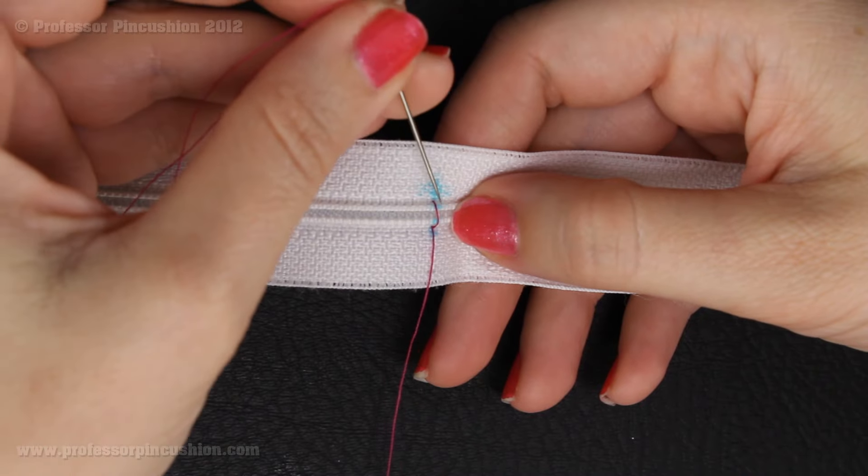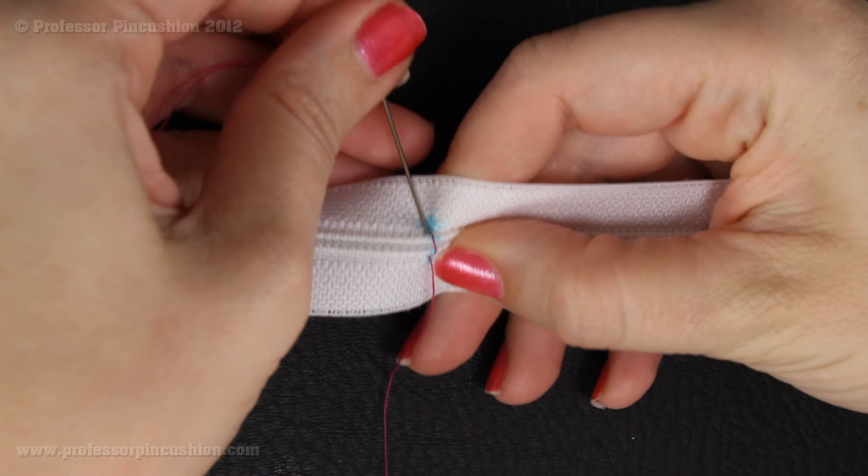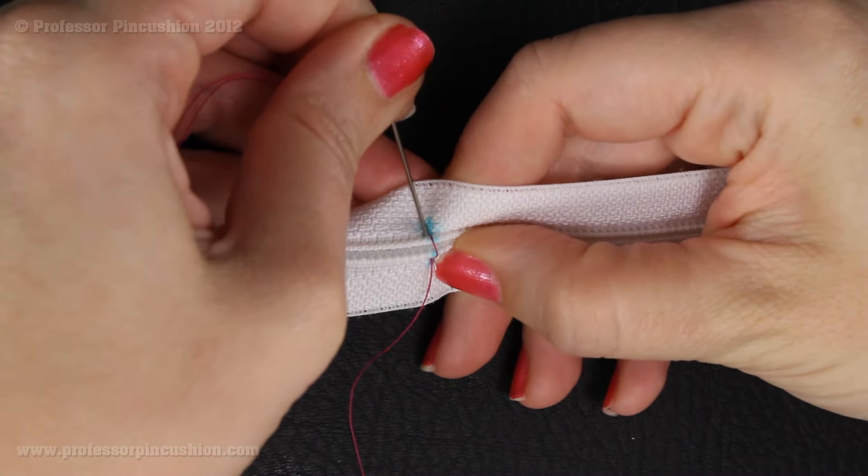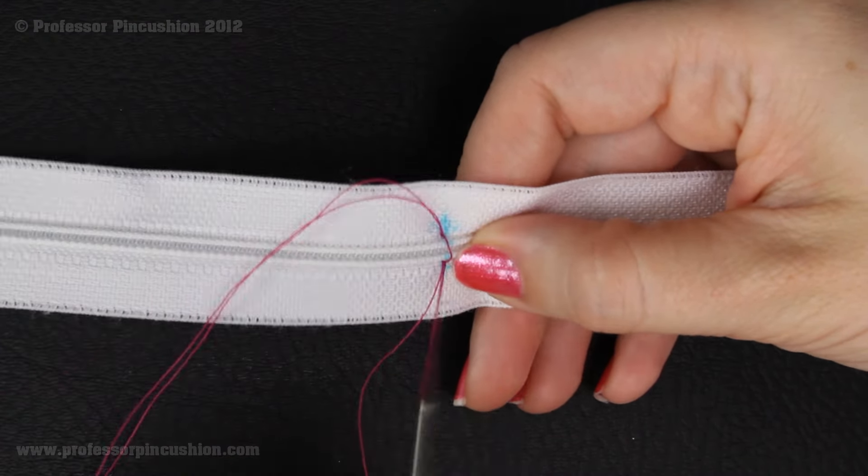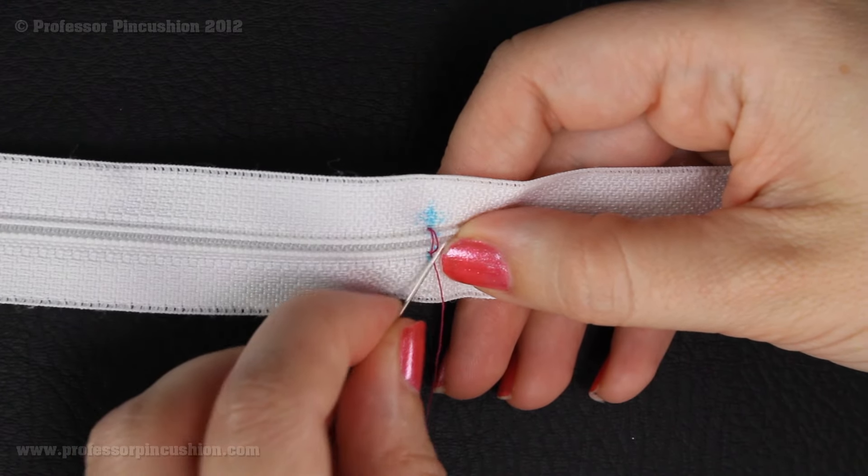So same thing, come around, come to the right side of my teeth or the top side. The point of the needle should come up right near where I first started stitching, and you're going to want them to be real close together.